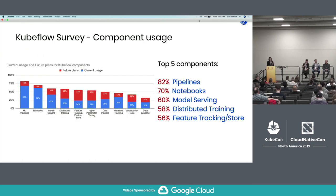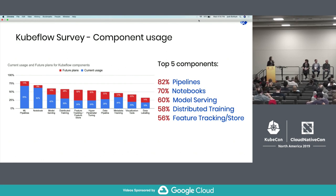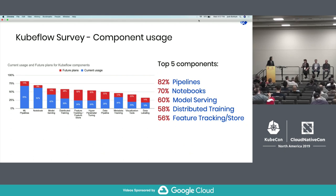Another slide here represents one of the most interesting questions — a breakdown of which components survey respondents used. What was most notable was that pipelines, no surprise, is one of the most popular components in Kubeflow. We also see notebooks being very popular, with an even spread across serving — which is pretty new — hyperparameter tuning, and metadata. I definitely agree, and I think hyperparameter usage is something we're very excited to see — everyone's going to be very excited about it. The Feast feature store is also going to be pretty popular across a lot of industries. A lot of people see pipelines as one of the access points to many other components within Kubeflow.